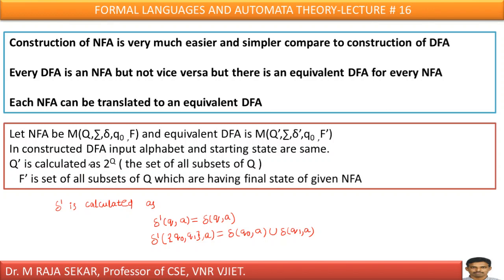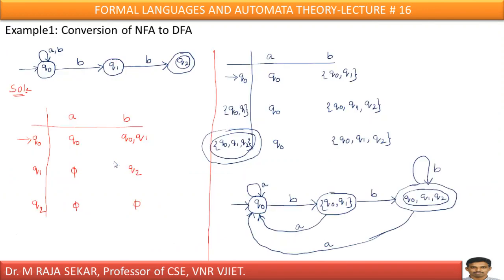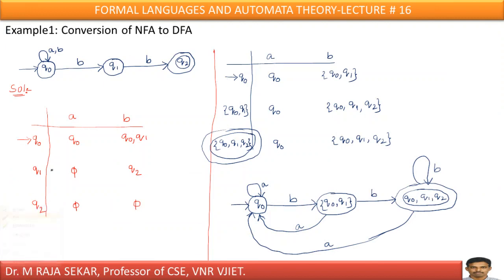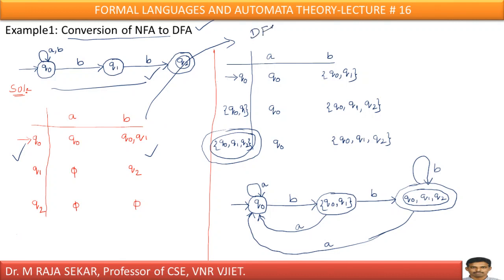After discussing those problems, just read this procedure — you can understand. Now, we will try to convert NFA to DFA. This is the given NFA. For the given NFA, you know how to formulate the table. I have formulated the table. After formulating the table, now let me construct the corresponding DFA.